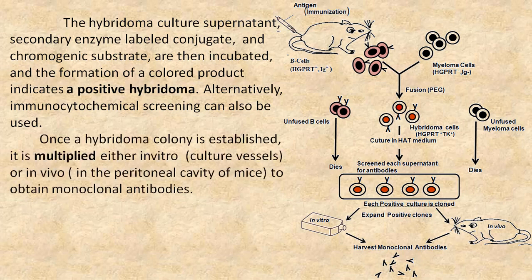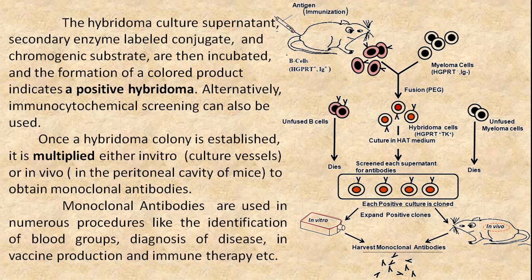Once a hybridoma colony is established, it is multiplied either in vitro or in vivo to obtain monoclonal antibodies. Monoclonal antibodies are used in numerous procedures like the identification of blood groups, diagnosis of disease, vaccine production, and immunotherapy.